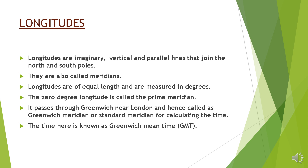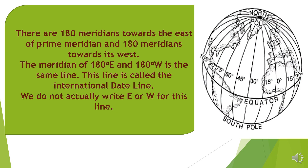The time here is known as Greenwich mean time. There are 180 meridians towards the east of the prime meridian and 180 meridians towards its west. The meridian of 180 degrees east and 180 degrees west is the same line, and this line is called the international date line. We do not actually write E or W for this line.